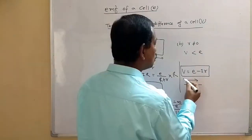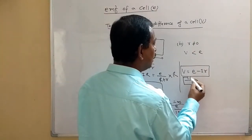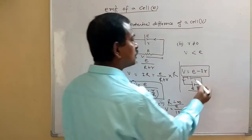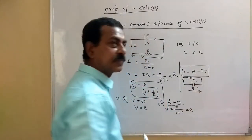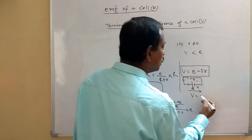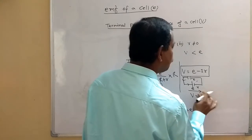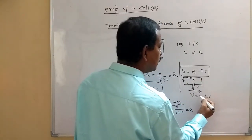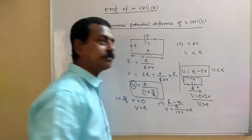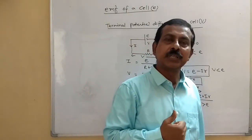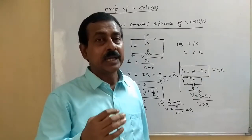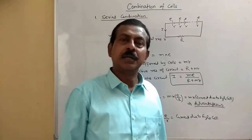But when a cell is being charged, another cell drives current through it in the opposite direction. Moving opposite to the current direction makes the internal resistance term positive: V equals E plus I·r, so V is greater than E. To summarize: when a cell is being charged, terminal potential difference is greater than EMF; in the general discharging case, EMF is greater than terminal potential difference.